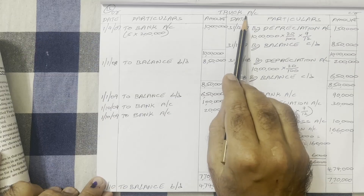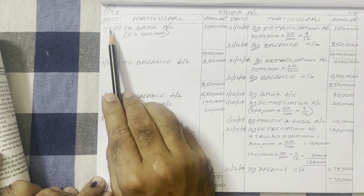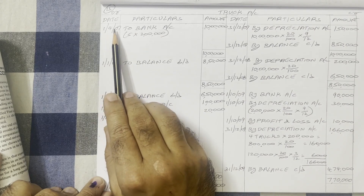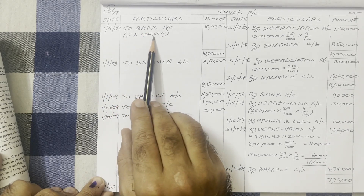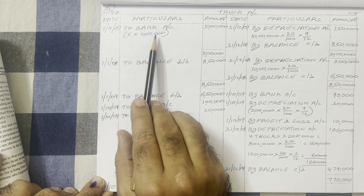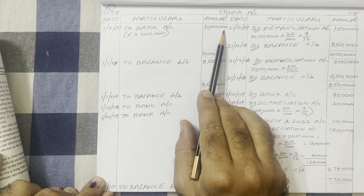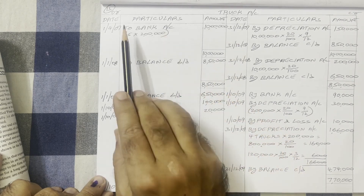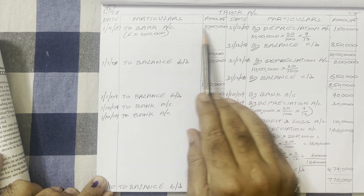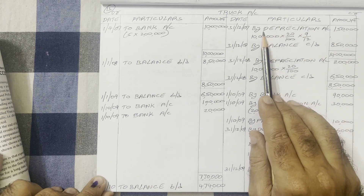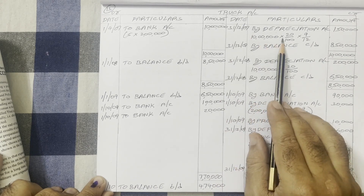Now see the solution. In the truck account, on the debit side: 1st April 2007, bank account — five trucks purchased at 2 lakh rupees each, so 5 × 2 lakh = 10 lakh rupees total. The accounting year closes on 31st December, so the first year's last date is 31st December 2007. On that date we must provide depreciation on all five trucks.